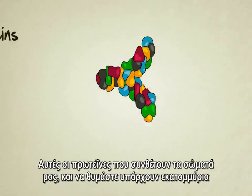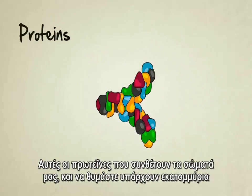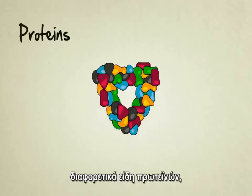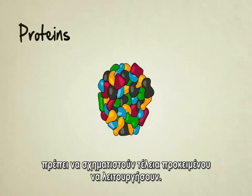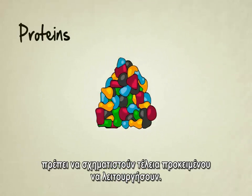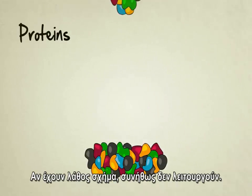These proteins that make up our bodies — and keep in mind, there's millions of different kinds of proteins — they each have to be formed in the perfect shape in order to function. If they're the wrong shape, they usually won't work.